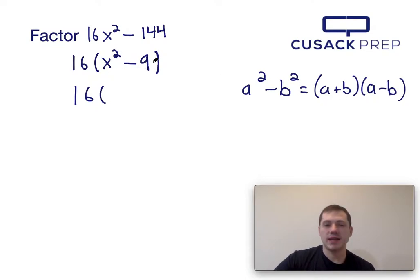x squared minus 9 is like a squared minus b squared, so in order to factor it I take the square root of x squared, which is just x, and I add it to the square root of 9, which is just 3, and then I do the same thing, but this time I subtract them.